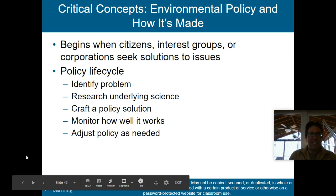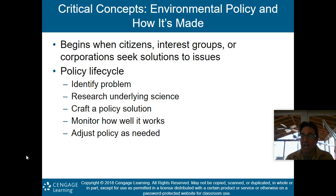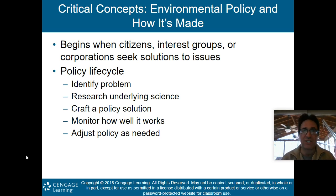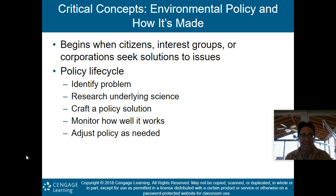Environmental policy: how is it made? It begins when citizens, interest groups, or corporations seek solutions to issues. The policy lifecycle is: first identify a problem, then research the underlying science, craft a policy solution, monitor how well it works, and adjust the policy as needed. The Endangered Species Act of 1973 is a good example — it was amended several times because monitoring showed that parts of it needed tweaking. These steps should be taken to make policies and laws as effective as possible.